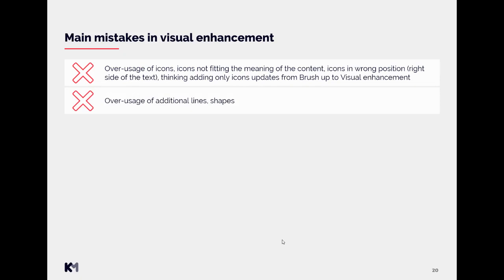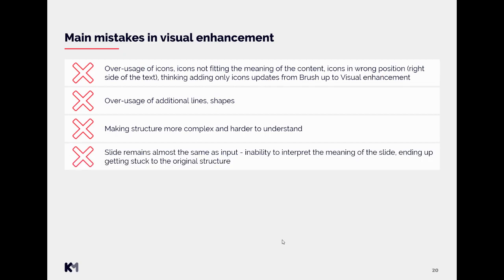Over-usage of lines and shapes to the extent where it becomes too heavy, too chaotic, and adds too much complexity to the slide is also not good. Another point: making the structure too complex and hard to understand — you should enhance the slide but still keep it easy to read. On the opposite hand, another mistake is when the slide remains almost the same as the input, showing an inability to interpret the meaning and ending up stuck with the original structure. We should really elevate the slide and bring different takes on the visual.